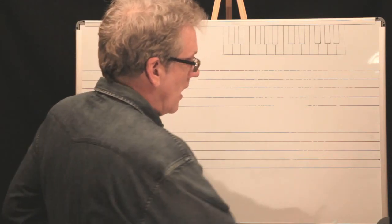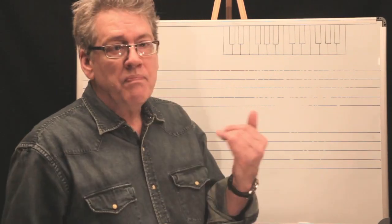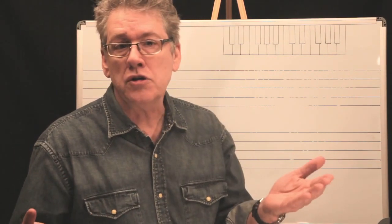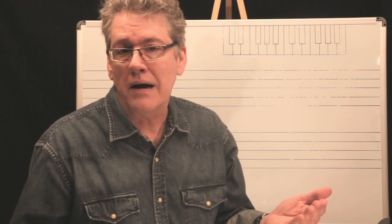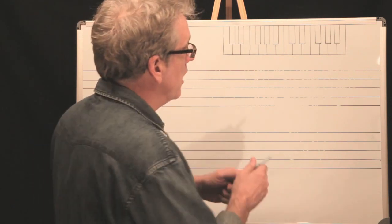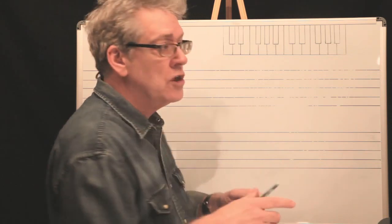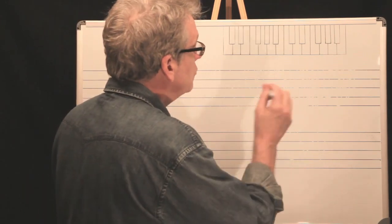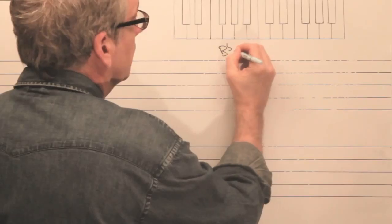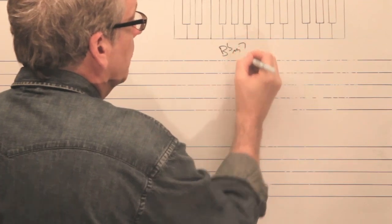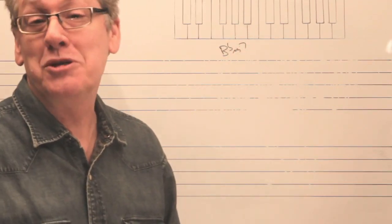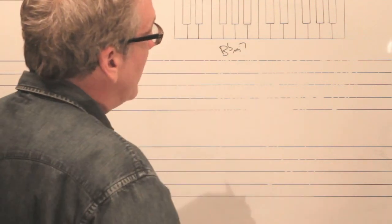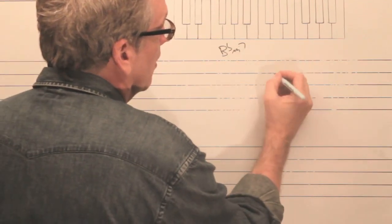So how does that work? If everybody's playing in unison or octaves, you don't have to worry about it. Let's start with an optional bone part. Our section is trumpet, saxophone, and trombone. Let's say we're in B-flat.